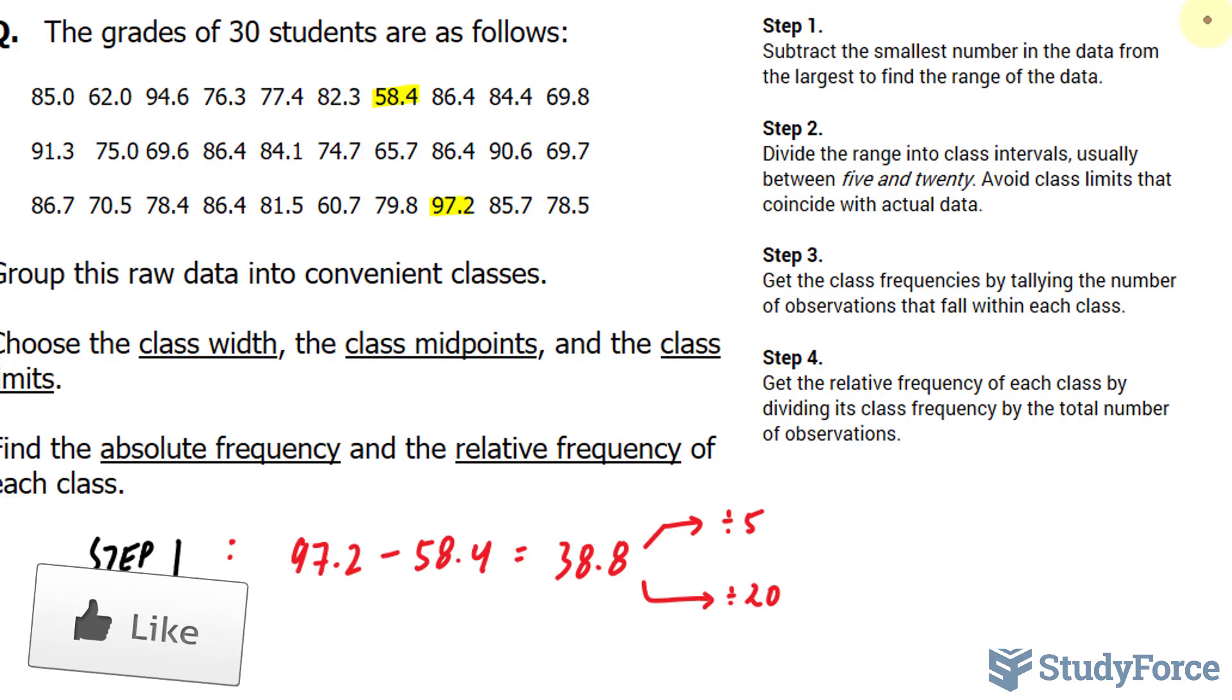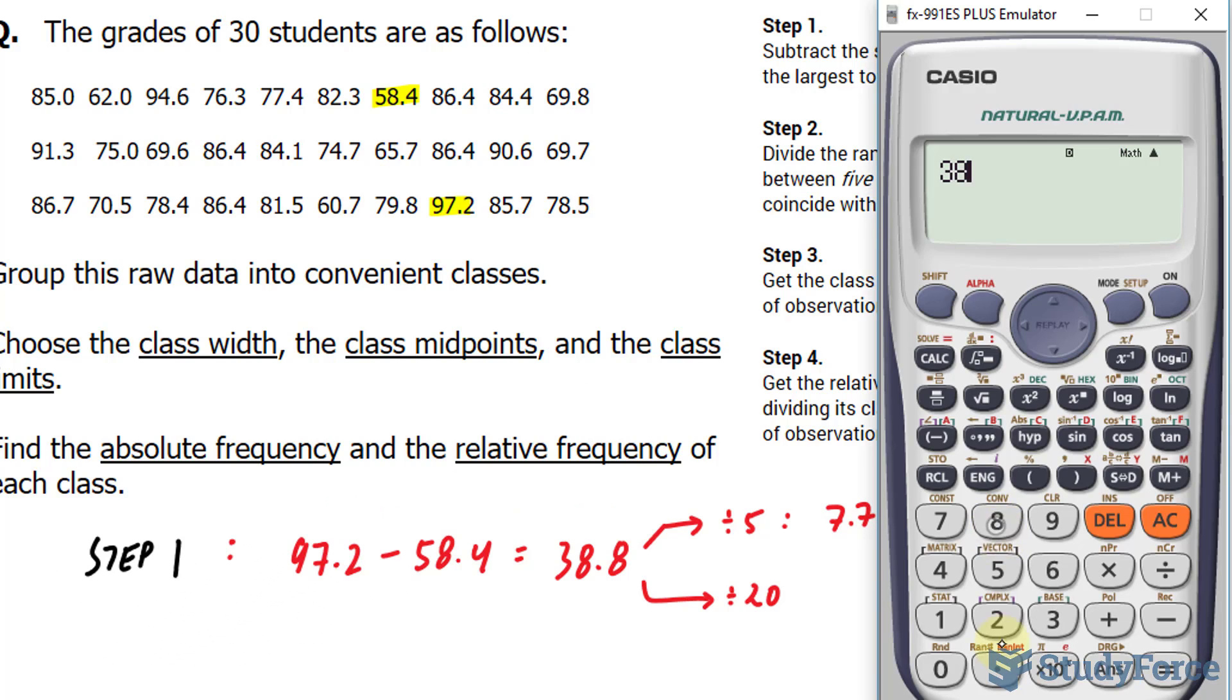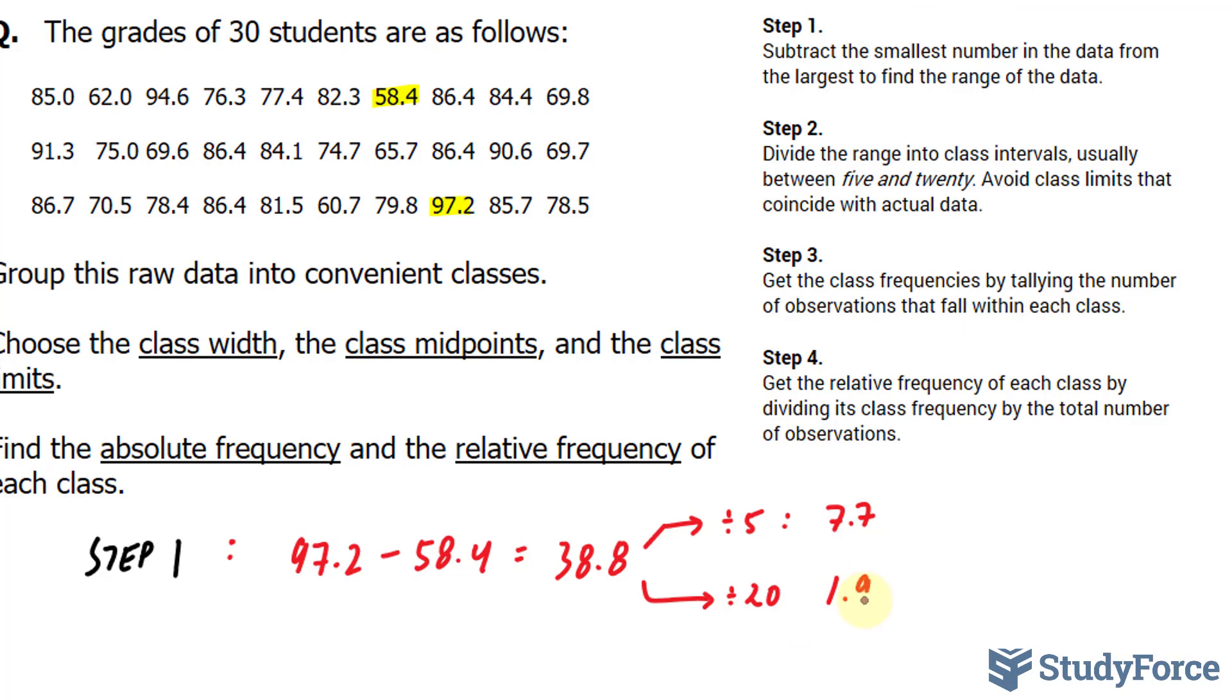Dividing 38.8 by 5 should give you 7.7. And using our calculator for the next, 38.8 divided by 20 gives us 1.94. We need to pick a convenient width between these two values. And because of that, I'll choose 6. So our class width is equal to 6.